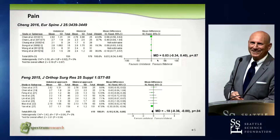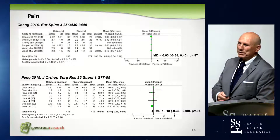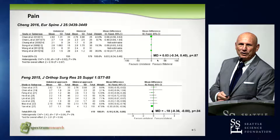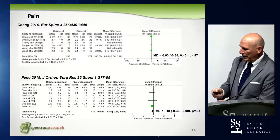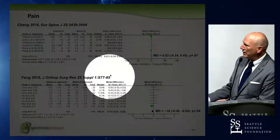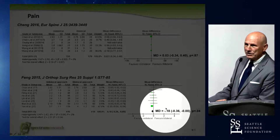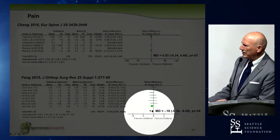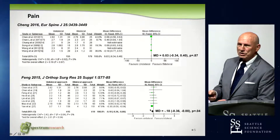A few months earlier, a systematic review by a different individual was published on the same topic, looking at the same outcome of pain. And they in fact found a difference in pain that favored the unilateral approach. So which do you believe?